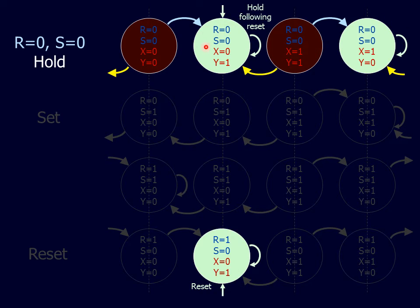Alternatively, the R equal 0, S equal 0 input state can transit from the reset stable state. In this case, the output X equals 0 does not change. Therefore, the operation can be called a hold following reset.